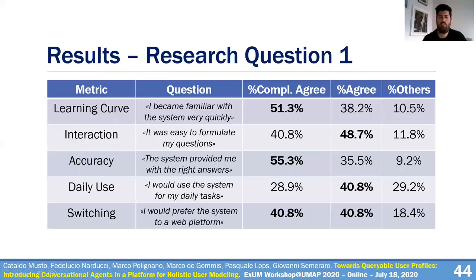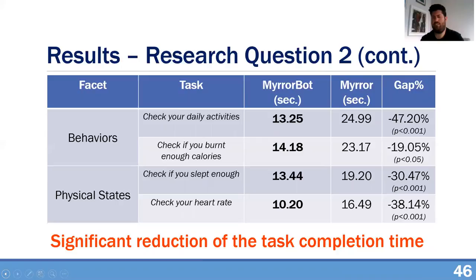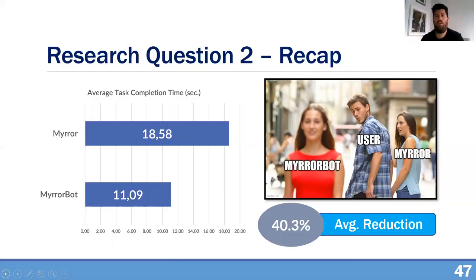For the first research question, you can see the metrics, the questions, and the percentage of users who completely agree or agree with each statement. Most users had a positive opinion towards the system and liked the general idea. For the second research question, for each task — one per facet of the user profile — we observed a significant reduction in task completion time when using MirrorBot. The adoption of a conversational interface leads to a reduction in the time needed to check information stored in the profile, confirmed across all tasks. In general, we achieved a 40.3% reduction in time needed to complete tasks, averaging seven seconds, which is quite good.